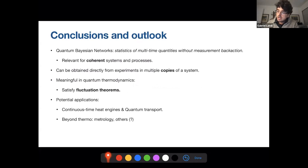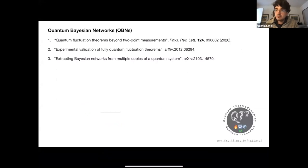So the conclusions and outlook. We introduced this notion of quantum Bayesian networks, which are relevant for thermodynamics of coherent systems. That's the take-home message, because it avoids the back action from the TPM measurement. Now, this Bayesian network, it satisfies nice physical properties, in particular fluctuation theorems. So we believe that these are meaningful and interesting objects to study, and they have their value, because of these kinds of things. And I also showed how they can be obtained from multiple copies of the system. In terms of future perspectives, we're looking now at the implementation of Bayesian networks for heat engines, quantum transport, and so on. And we're also thinking a little bit about metrology, maybe thermometry, and so on. So that's it. Thank you very much. And I'm open for questions.